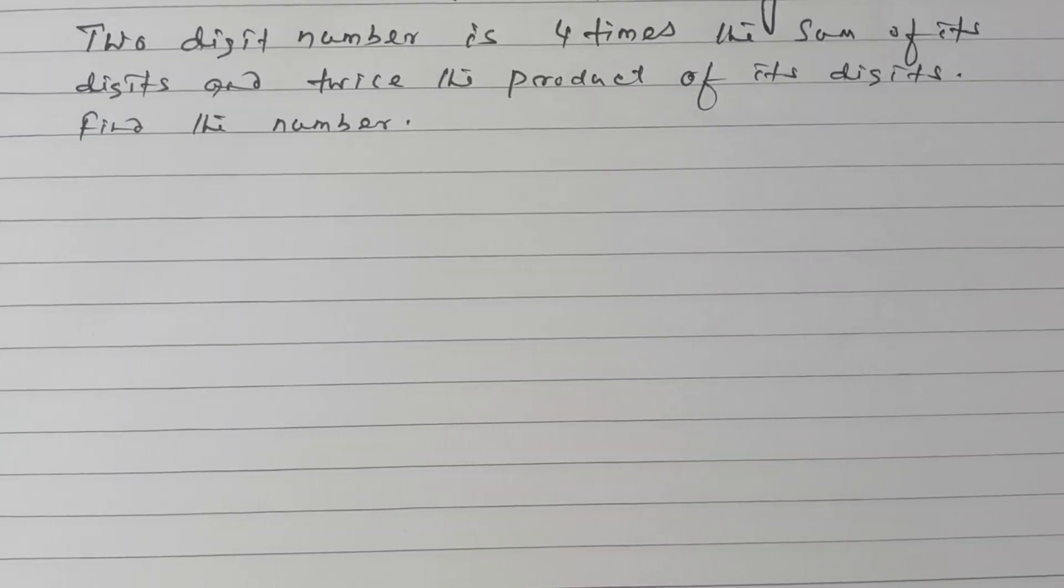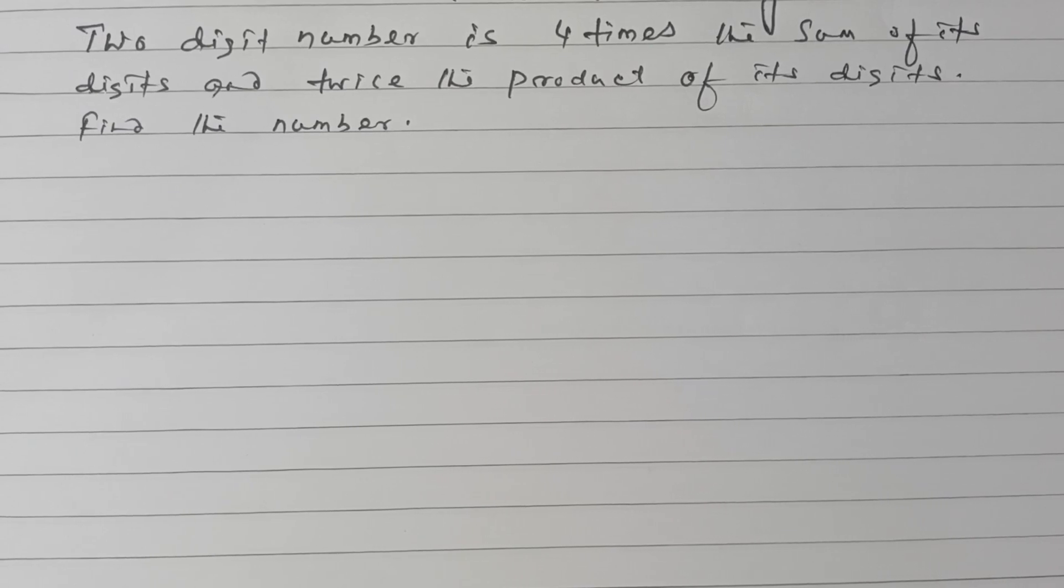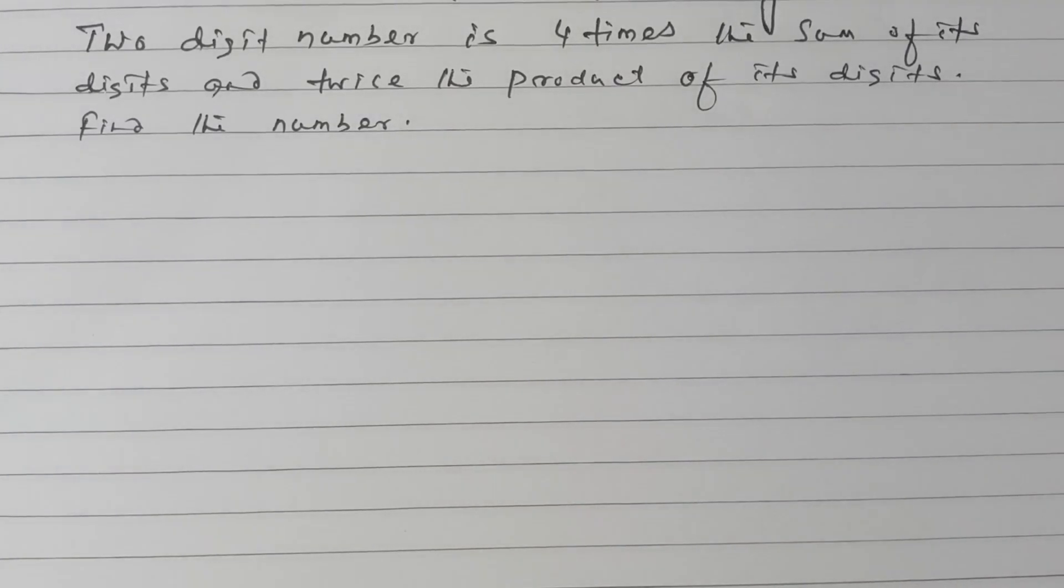A two-digit number is four times the sum of its digits and twice the product of its digits. Find the number.